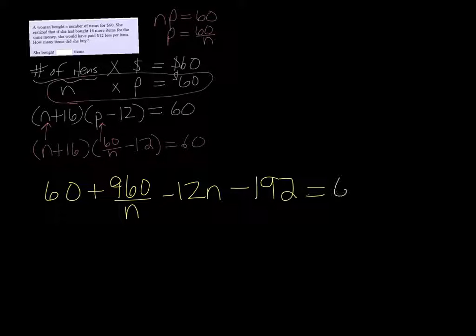Alright, so that equals 60, and if we combine our like terms, 60 minus 192 would be negative 132.